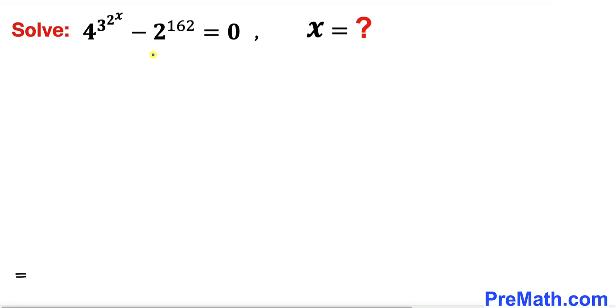Welcome to PreMath. In this video we're going to solve this given nested exponential equation: 4^(3^(2^x)) - 2^162 = 0. In other words, we're going to find the value of x.